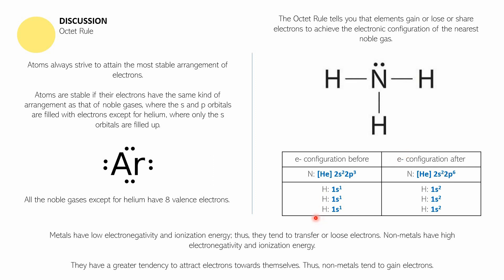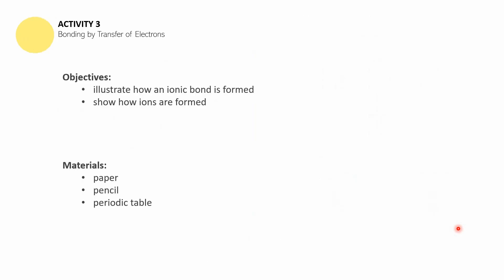Metals have low electronegativity and ionization energy. Thus, they tend to transfer or lose electrons — such as calcium giving away its electrons. Non-metals have high electronegativity and ionization energy; they have a greater tendency to attract electrons towards themselves. So non-metals tend to gain electrons and not lose them. That is the Octet Rule — remember the rule of eight.